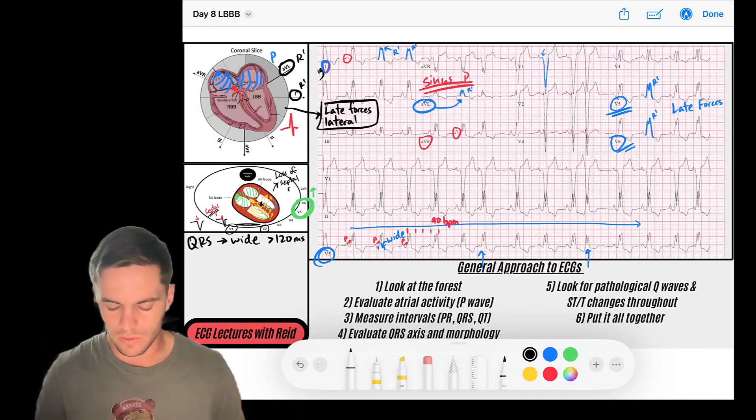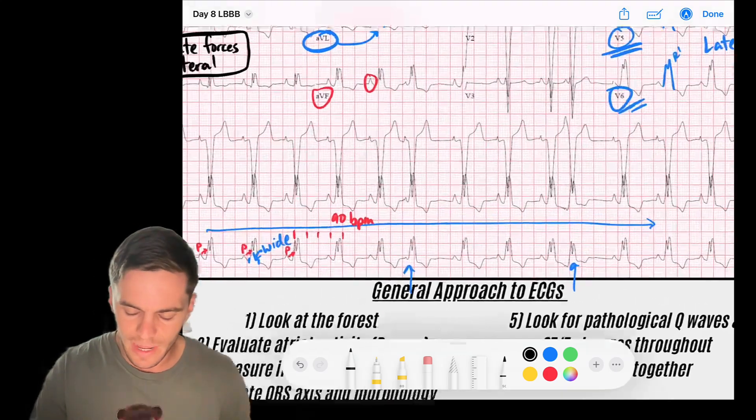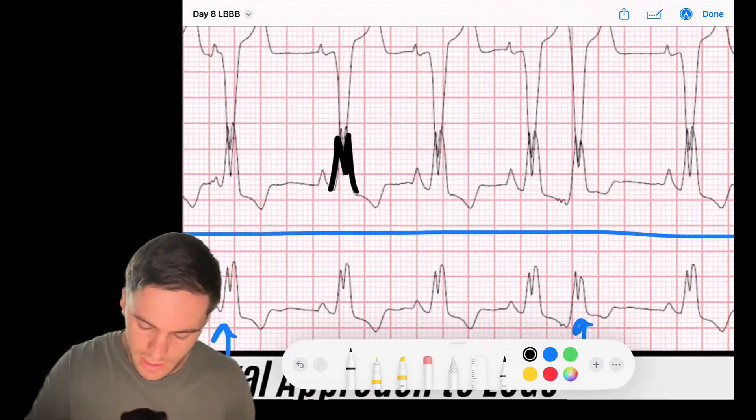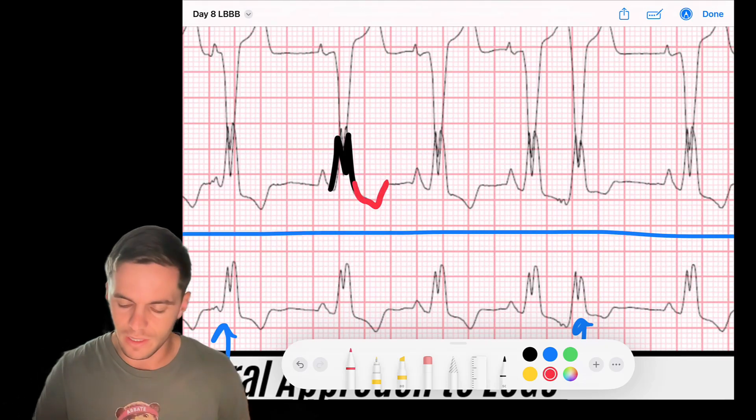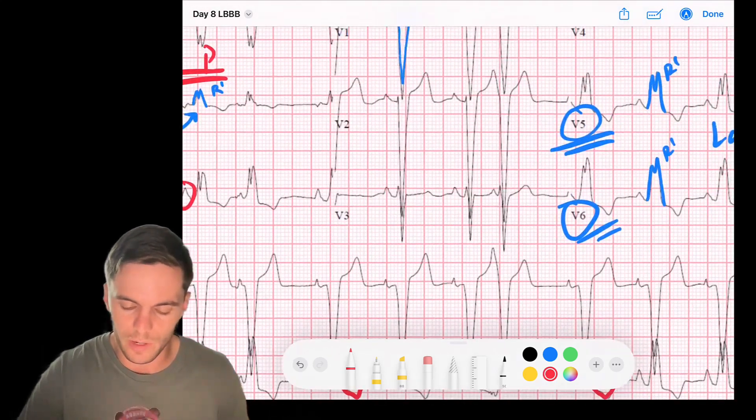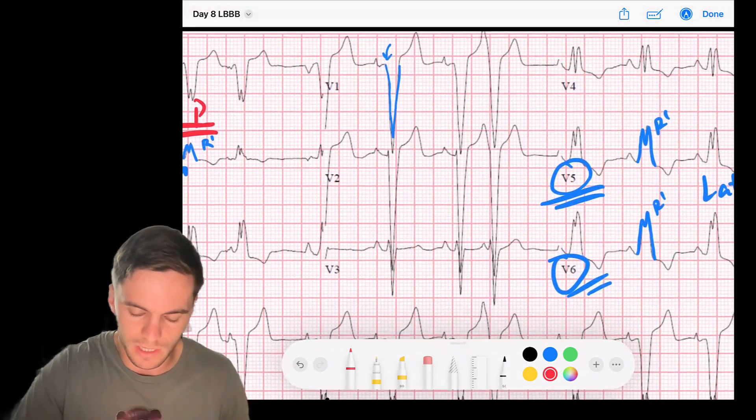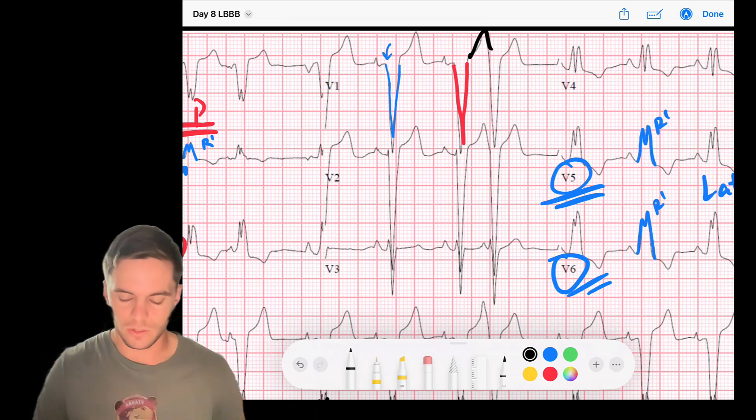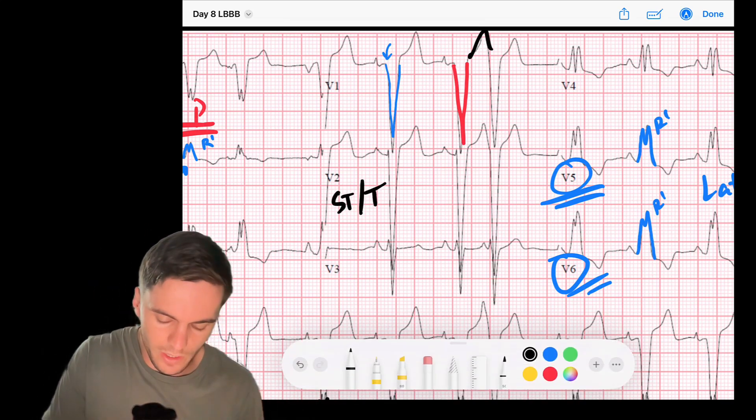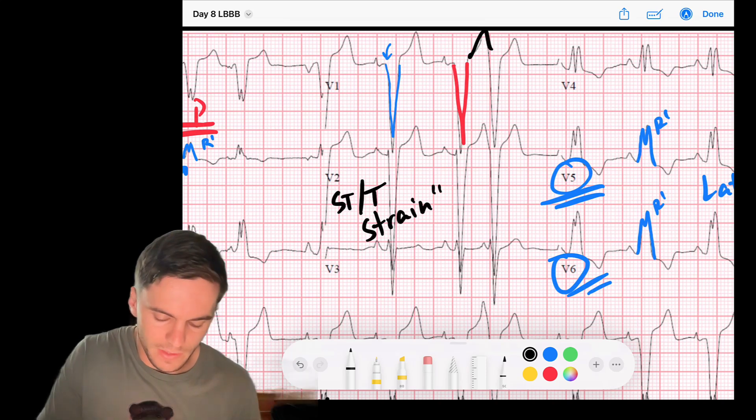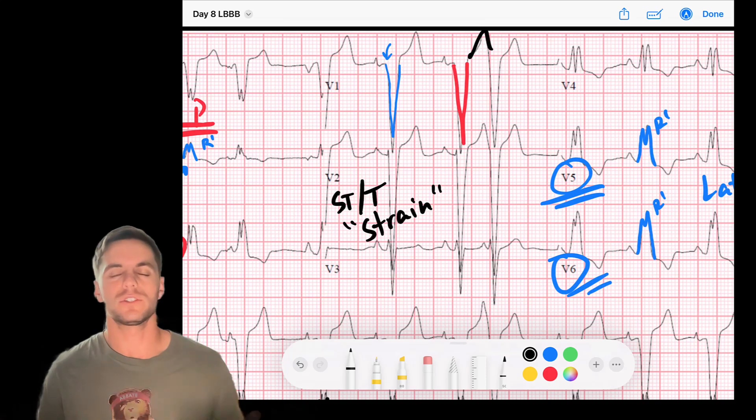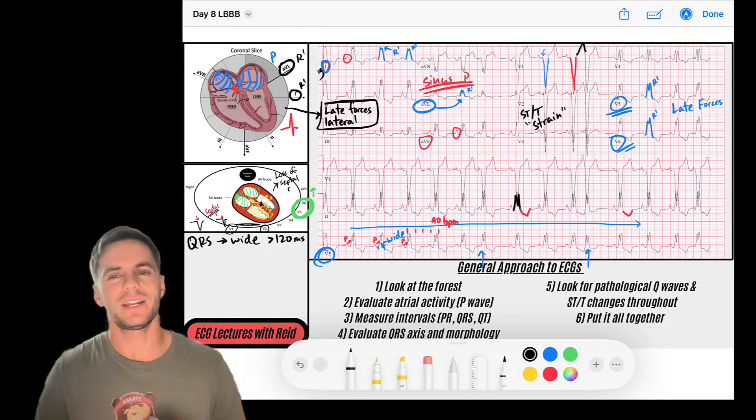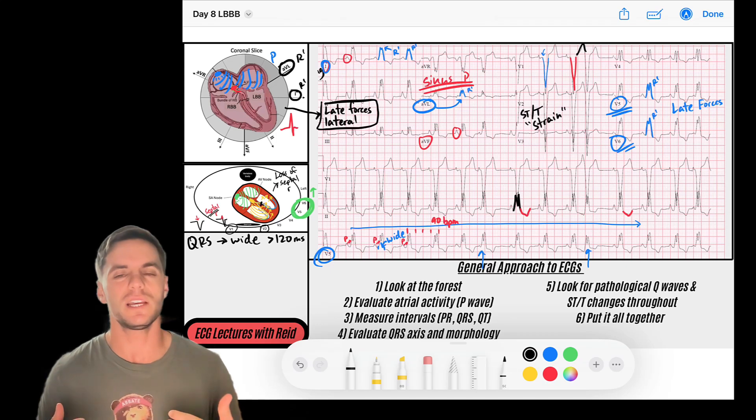And then there's one more thing I want to talk to you about generally with bundle branch blocks. It's that you see that after the QRS complex here, notice that the T wave and the ST segment are inverted. We have those inverted T waves. And it's kind of like that throughout the EKG. Anytime that there is a negative QRS, we have a positive T wave. Anytime that it's a positive QRS wave, a negative T wave. That's called ST slash T wave strain. And that strain pattern is because when we have aberrant conduction through the ventricles, you're also going to have aberrant repolarization. Remember that the T wave is representative of repolarization. So that's a little quick look for that ST and T wave strain. It makes it really hard to evaluate for ST and T wave changes on an EKG.